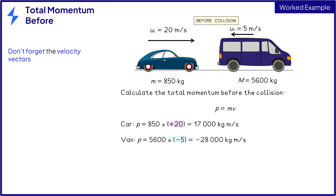It is minus 5 because the van is traveling in the opposite direction to the car. Now I'll find the difference between the two momenta to obtain the total. The total is equal to 17,000 minus 28,000, which is equal to minus 11,000 kilograms meters per second for one mark.